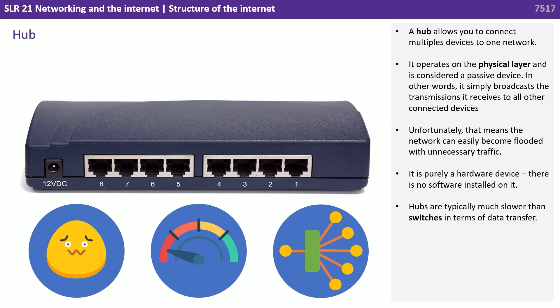A hub allows you to connect multiple devices to one network. It operates on the physical layer and is considered a passive device — it simply broadcasts the transmission it receives to all other connected devices. Unfortunately, that means the network can easily become flooded with unnecessary traffic. It is purely a hardware device with no software installed on it. Hubs are typically much slower than switches in terms of data transfer.